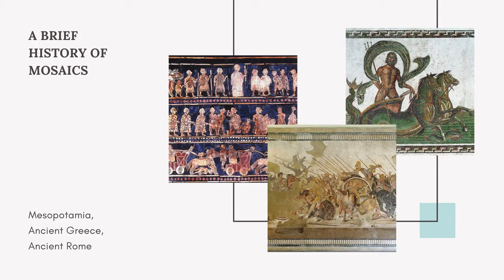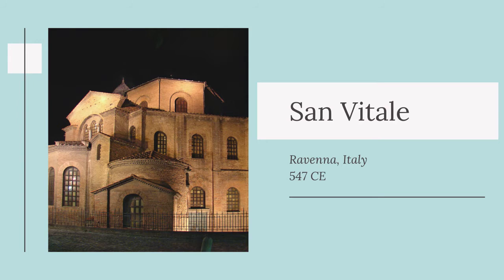No examination of mosaics would be complete without a discussion of San Vitale in Ravenna. This church was dedicated in 547 CE by Bishop Maximian. It's an octagonal planned church filled with mosaics telling the stories of the Old Testament, angelic figures, Jesus, the Twelve Apostles, and San Vitale with his sons. But the most famous pieces are actually of Emperor Justinian and his wife, the Empress Theodora.